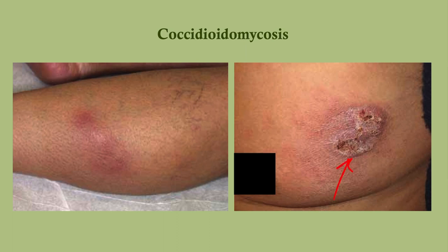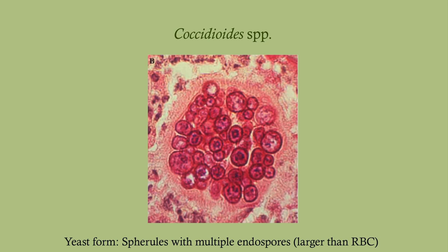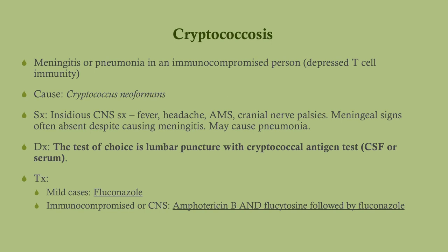The speaker shares a personal experience: from Minnesota, they visited Arizona and hiked near the Grand Canyon, returning with joint pain, fatigue, weight loss, and skin lesions. Doctors checked for lupus and cancer before someone asked about travel — Arizona was the clue. They were referred to infectious disease, and the diagnosis was made. Mild cases of coccidioidomycosis don't need treatment, but severe or immunocompromised cases and pregnant patients are treated with itraconazole or amphotericin B. Pregnant patients must receive amphotericin B, as azole antifungals are teratogenic. Microscopically, the fungus forms spherules containing endospores, which are much larger than a red blood cell.